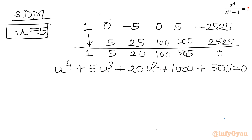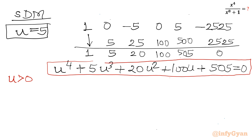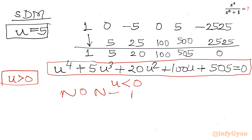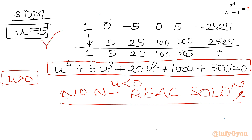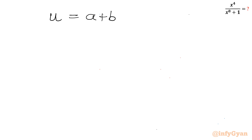Now, u = a + b was required to be greater than 0. Observing the quartic equation u⁴ + 5u³ + 20u² + 100u + 505, all coefficients are positive, so any real value of u satisfying it would be negative — a contradictory condition. Those roots are non-real. So the only valid solution is u = 5, meaning a + b = 5.